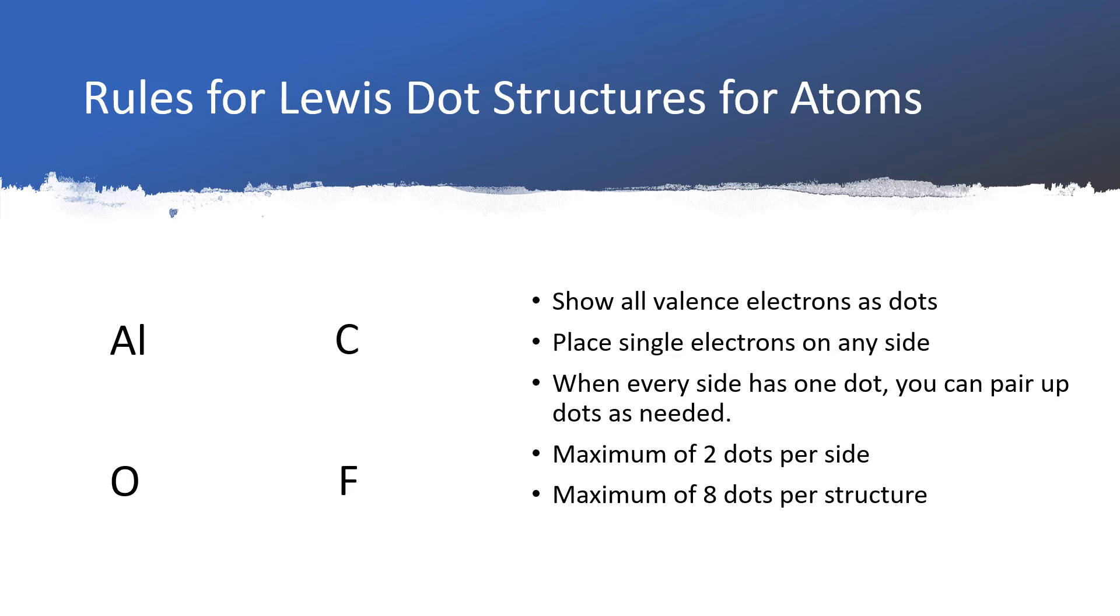You can find aluminum, which is atomic number 13, coincidentally in group number 13. So aluminum has three valence electrons, and so we'll take those electrons and draw them one on each side of aluminum.